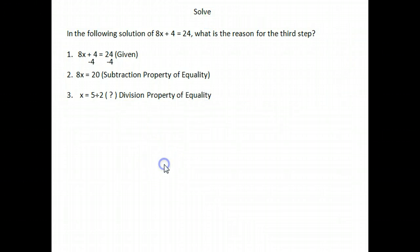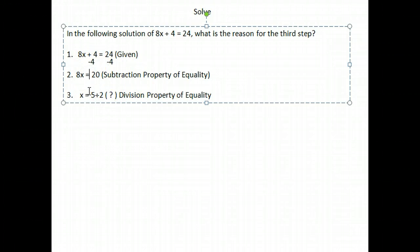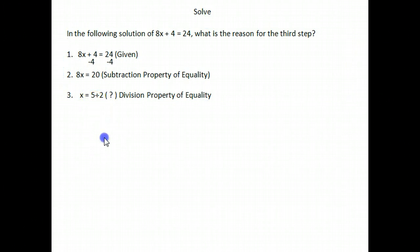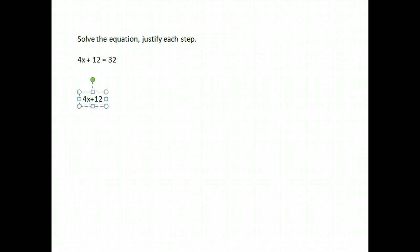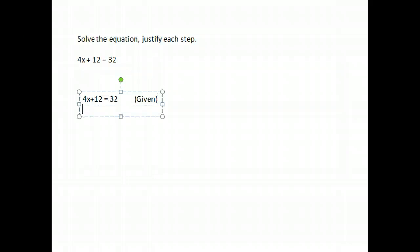That is our reason for that step — that's how we got from here to there. We divided both sides by 8. Now here's one we're going to do the full thing ourselves and justify each step. We are going to solve 4x plus 12 equals 32. Our first step is that 4x plus 12 equals 32. What's our reason? That was given. Almost always in a proof, your first step is given.